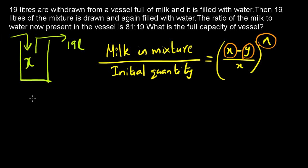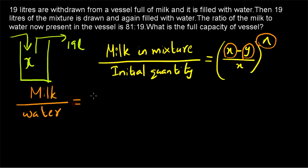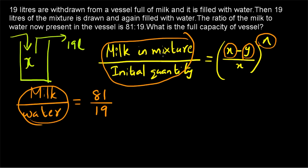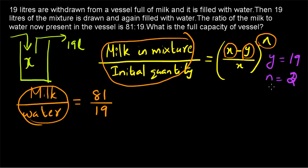We are given the ratio of milk to water present in the vessel. The amount of milk in the final mixture to the amount of water is 81 to 19. We can find the milk-in-mixture to initial-quantity ratio from this. Once we find that ratio, we can substitute it into the formula to find x. We already have y equal to 90 and n equal to 2.